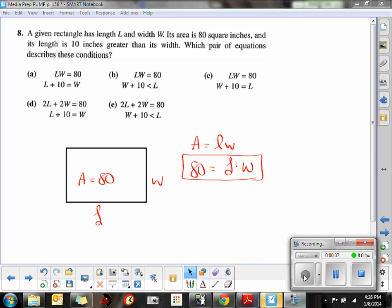The second thing that they say is that the length is 10 greater than the width. So we know that the length is 10 greater than the width. So there's our second set of conditions.